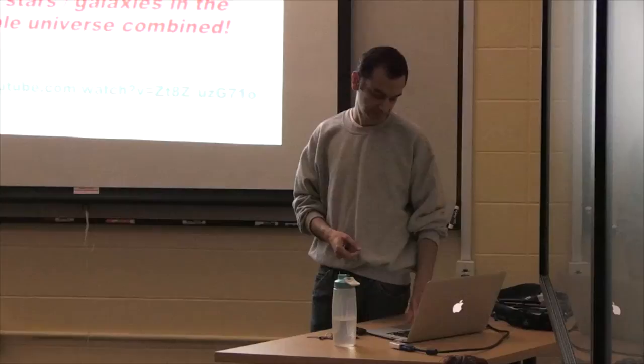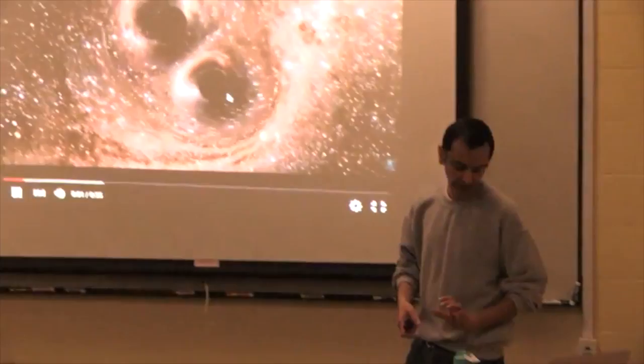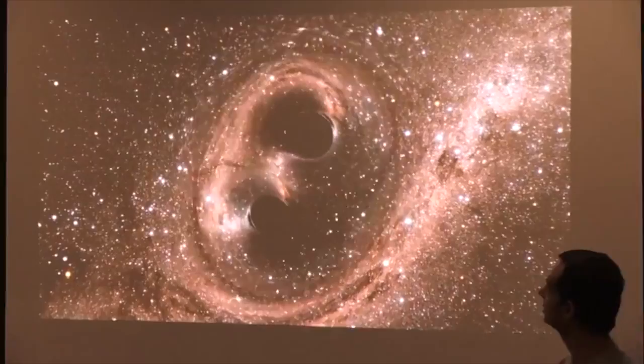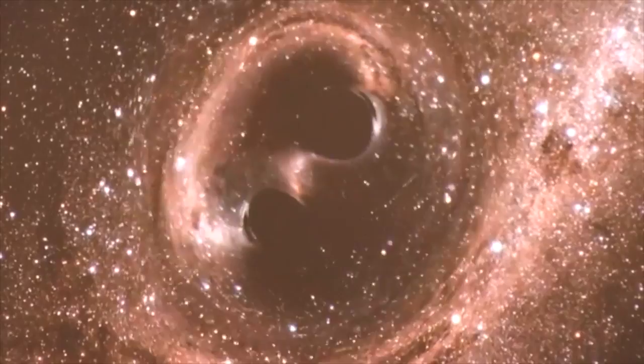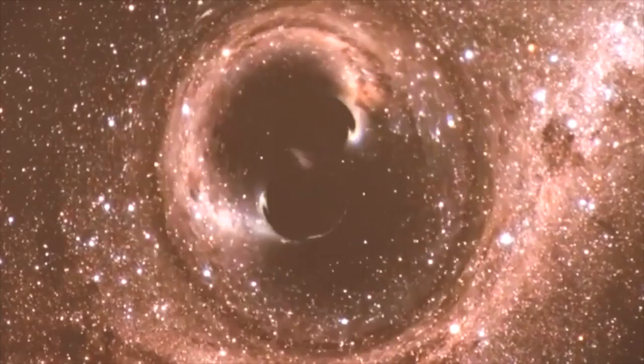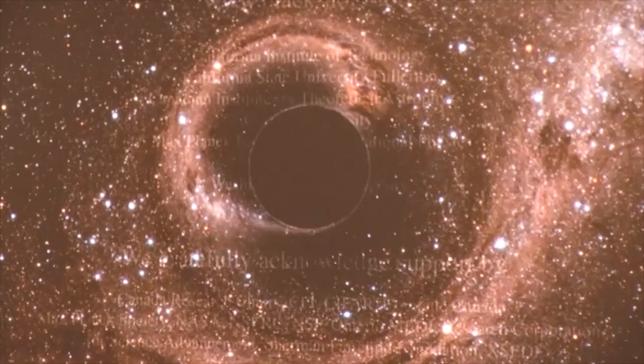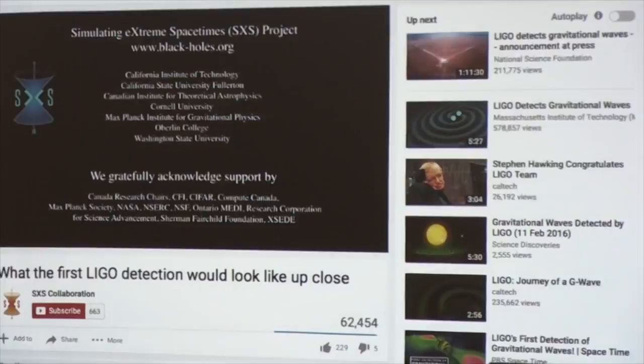A video shows what the collision would look like up close: two black holes of roughly similar size — one slightly smaller — orbiting each other. The stars appear to dance due to gravitational lensing. The whole merger happens very quickly, and you see the system settle down into a single larger black hole, with three solar masses worth of energy released in a fraction of a second.